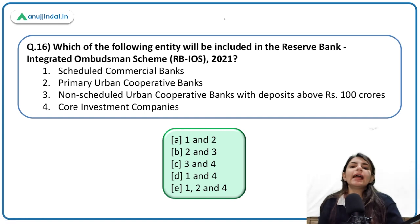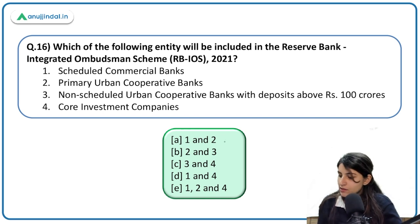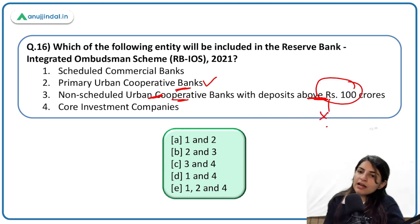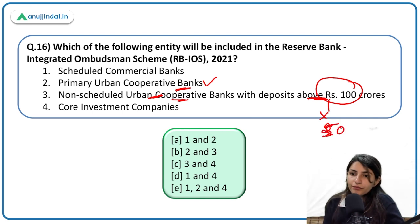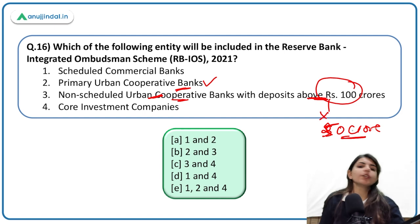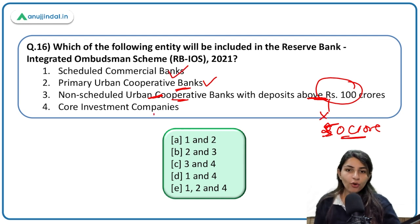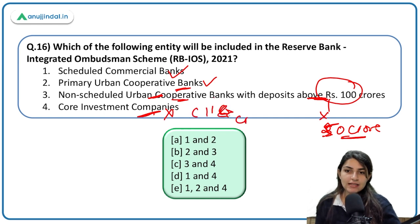Which entities are included in the RBI Ombudsman Scheme? Scheduled commercial banks — yes. Primary urban cooperative banks — yes. Non-scheduled urban cooperative banks with deposits over 100 crore — incorrect; the correct threshold is deposits over 50 crore. Core investment companies — no; these should be credit information companies (CICs). So the third and fourth statements are incorrect. The correct inclusions are scheduled commercial banks, primary urban cooperative banks, non-scheduled UCBs with deposits over 50 crore, and credit information companies.